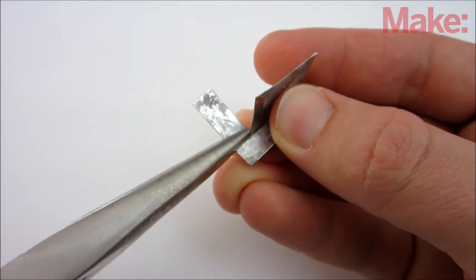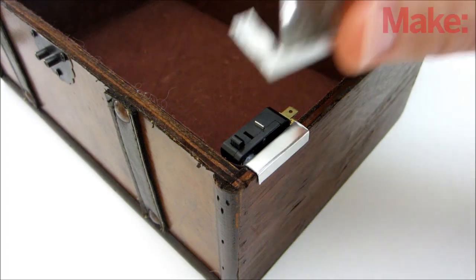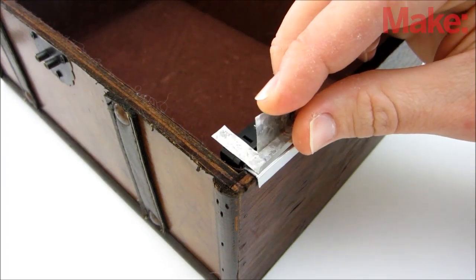Using a pair of pliers, bend the section down so that it's flush with the bottom. This tab is what will press the button when the lid is closed.